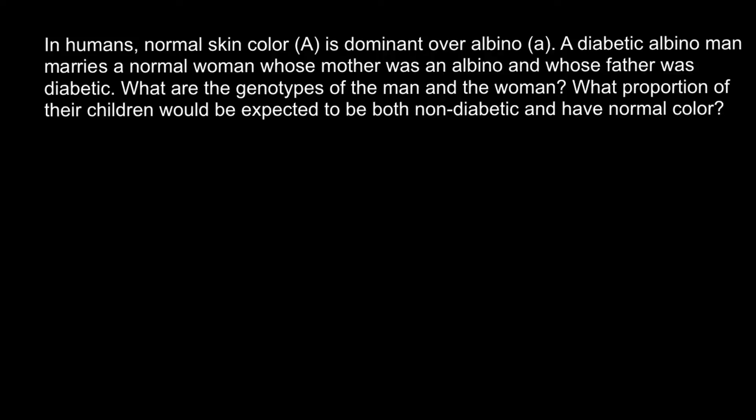Let's pretend this is a simple Mendelian genetics problem with only two alleles — one dominant and one recessive — for each trait. So how are we going to solve this? We know that we have a diabetic albino man. If we have two genes, let's say gene A and gene B, because he is albino he must have two defective alleles: small a, small a. And because he is diabetic, he must also have two defective alleles for diabetes: small b, small b. So his genotype is aabb.